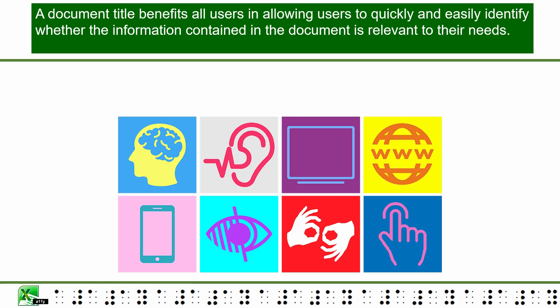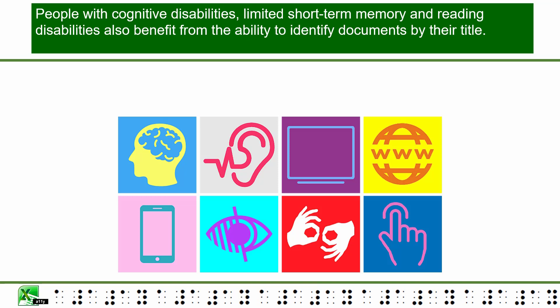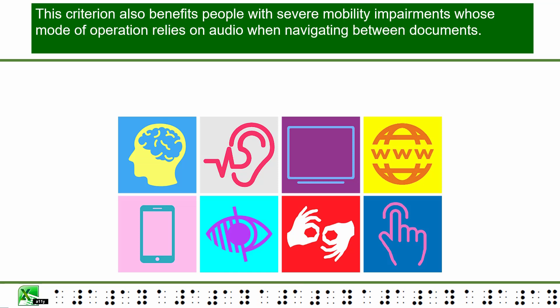A document title benefits all users by allowing them to quickly and easily identify whether the information contained in the document is relevant to their needs. People with visual disabilities will benefit from being able to differentiate content when multiple documents are open. People with cognitive disabilities, short-term memory, and reading disabilities also benefit from the ability to identify documents by their title. This criterion also benefits people with severe mobility impairments whose mode of operation relies on audio when navigating between documents.